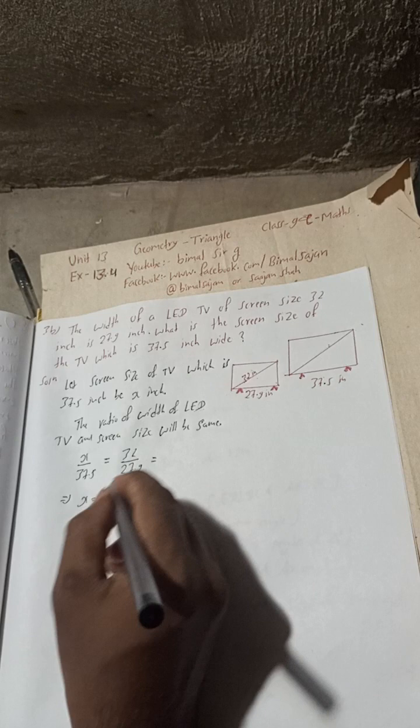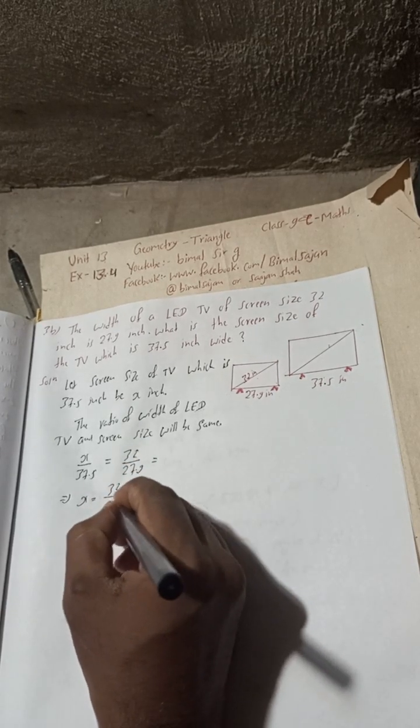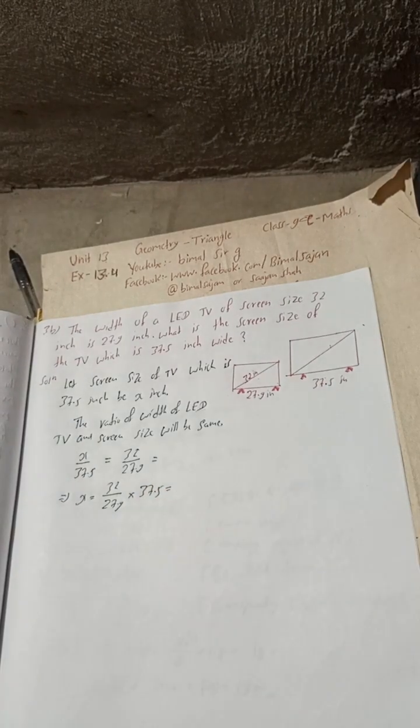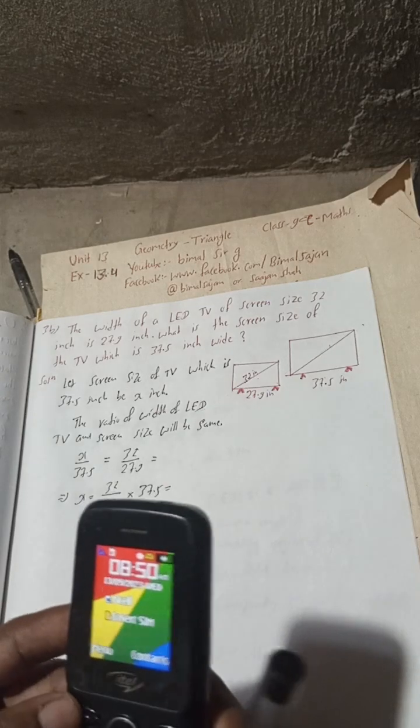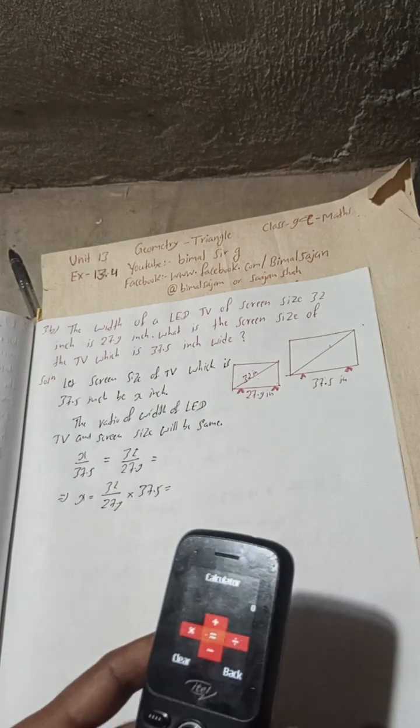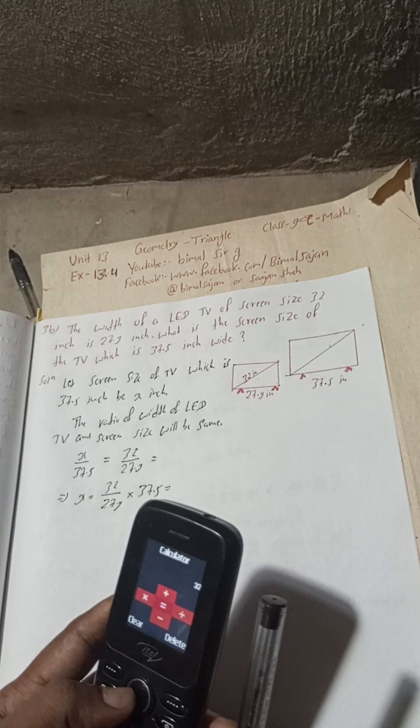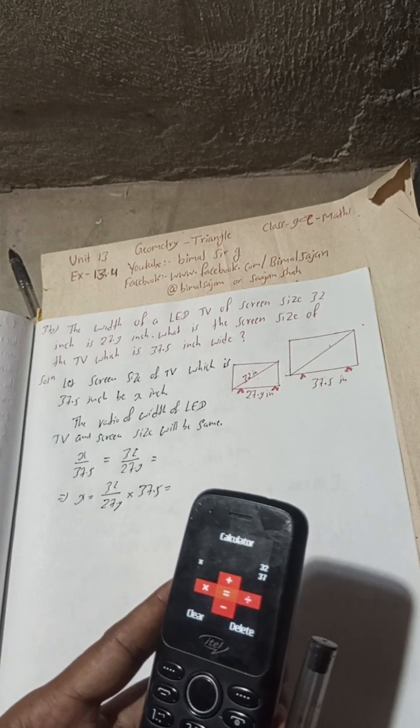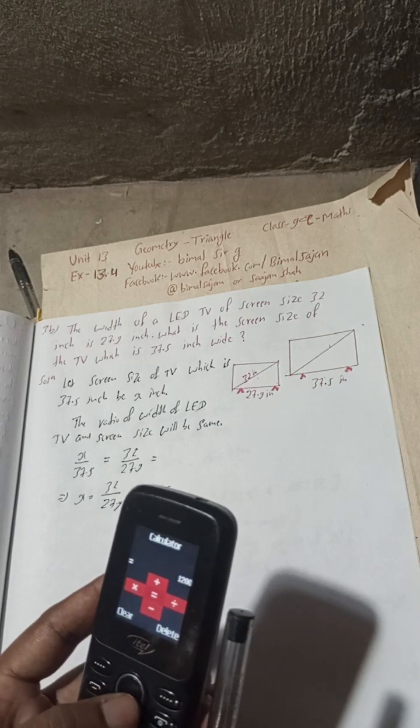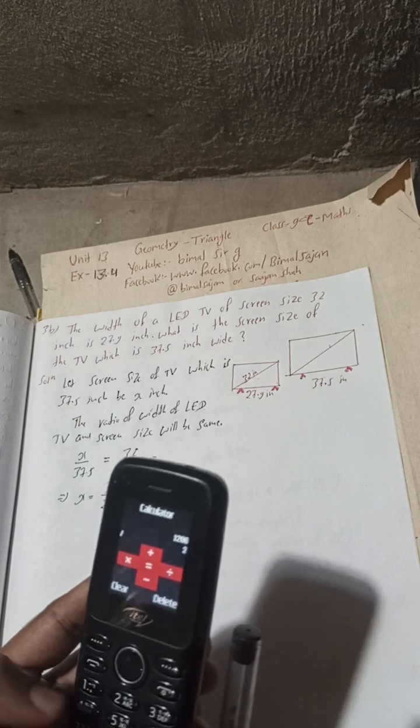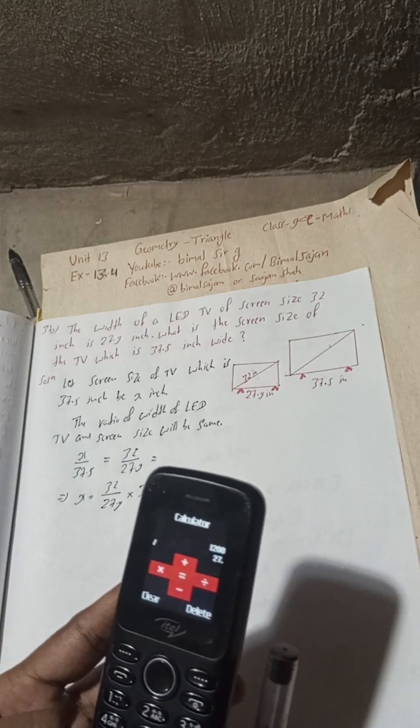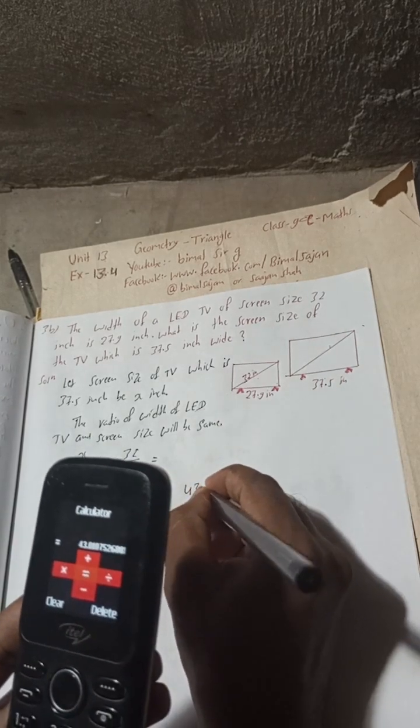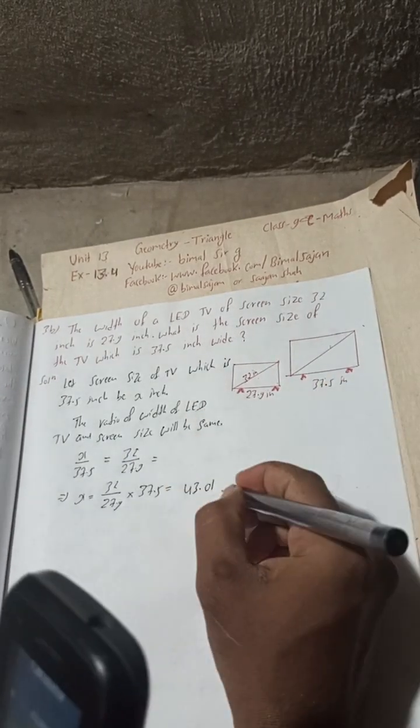So this implies x equals 32 divided by 27.9 times 37.5. Using the calculator: 32 times 37.5 divided by 27.9. Here you will get 43.01 inch.